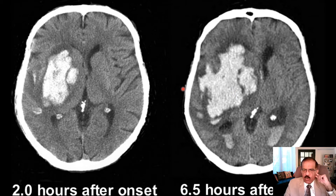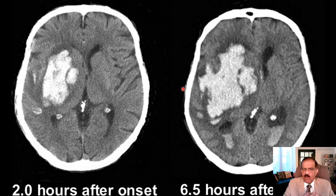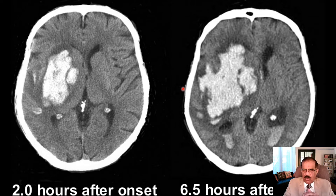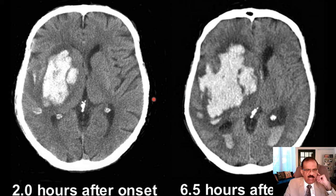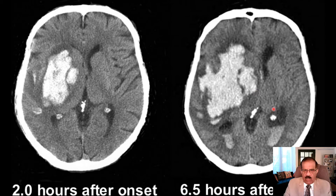Hematoma in the posterior fossa is another indication for evacuation. You must take the advice of a neurosurgeon, who will decide if evacuation is appropriate. The three conditions that need to be fulfilled are: it has to be early, it has to be superficial, and especially if it is large and not in the posterior fossa. You would never give thrombolytic agents, aspirin, or clopidogrel to these patients.